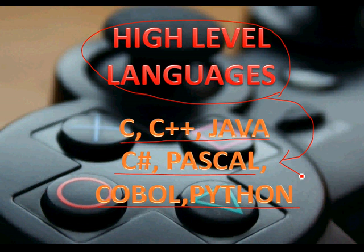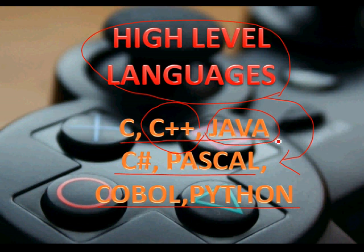High-level languages have English-like syntax, so they are easy to learn and easy to implement. They are pretty fast, and any human being can understand and learn these languages and program the computer.